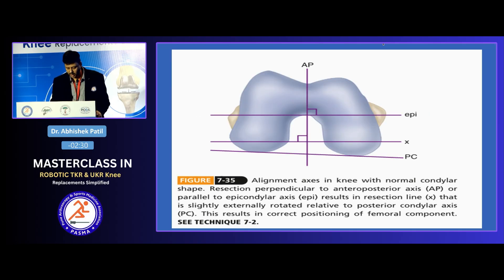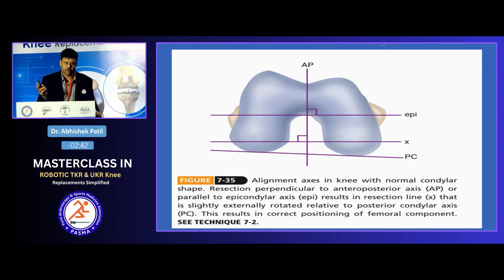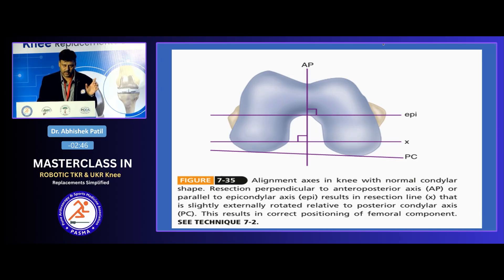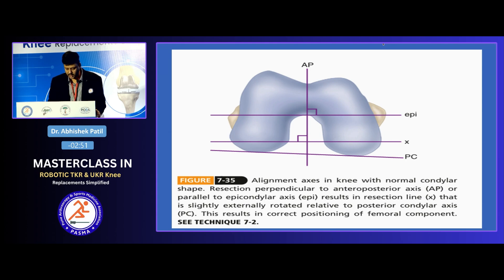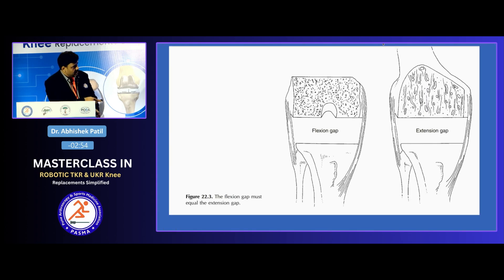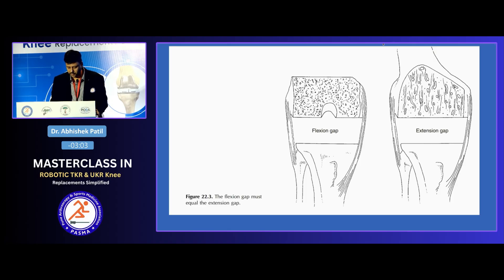The amount of external rotation and the landmarks used to determine femoral rotation include the transepicondylar axis, Whiteside's line, and the posterior condylar line. Rotation can vary from minus 2 to as much as 7 degrees, individual to each patient. The ultimate goal is to achieve a balanced and equal flexion and extension gap so that the knee functions well.